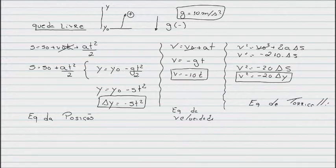This way, the equation begins to assume this format. The height equals the initial height minus gravity times time squared divided by 2. But gravity is 10, and 10 divided by 2 is 5. So the variation of height is minus 5t². This will be our position equation for free fall.